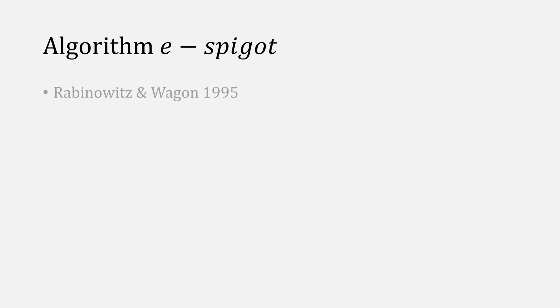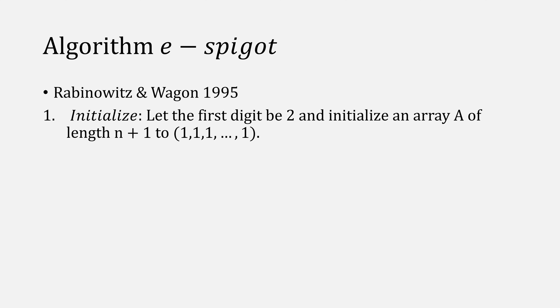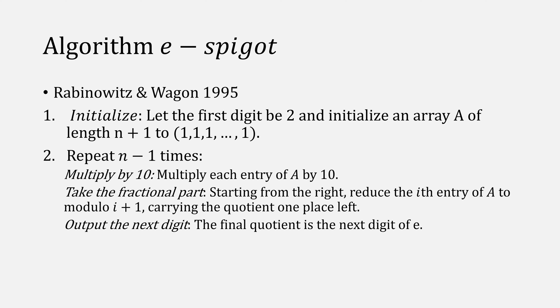In 1995, Rabinowitz and Wagon published an algorithm known as e-spigot, which is very short, firstly creating an array of ones for the number of digits that you want, and then essentially multiplying by 10 and doing integer division and modulus, moving quotients over to give you one digit at a time.